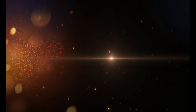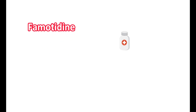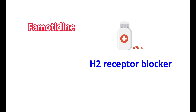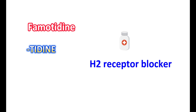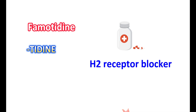Hi everyone. Today in this video let us discuss about famotidine. Famotidine is one of the medications classified as an H2 receptor blocker. We can identify these category of medications by the suffix '-tidine', so medications like cimetidine, ranitidine, and nizatidine all belong to the same category — they are H2 receptor blockers.